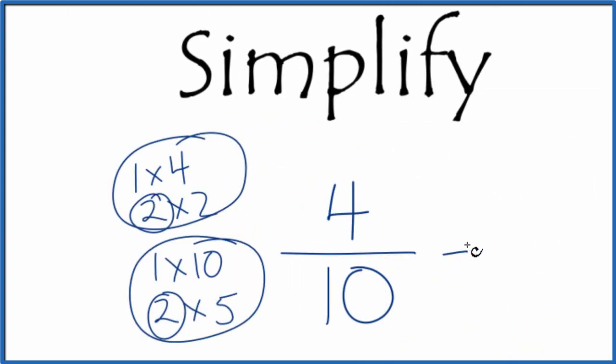So 4 divided by 2, that's 2. 10 divided by 2, that's 5. 5 times 2 is 10. So when we simplify the fraction 4 over 10, we end up with 2 over 5.